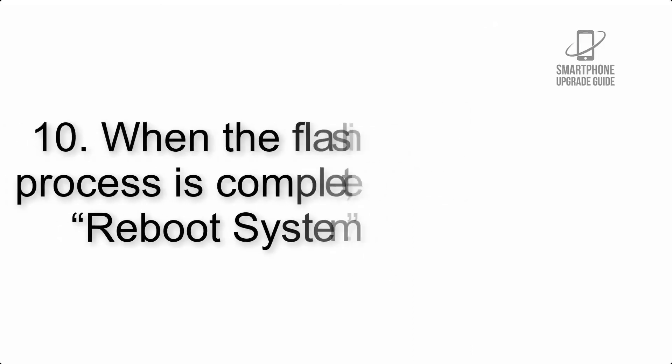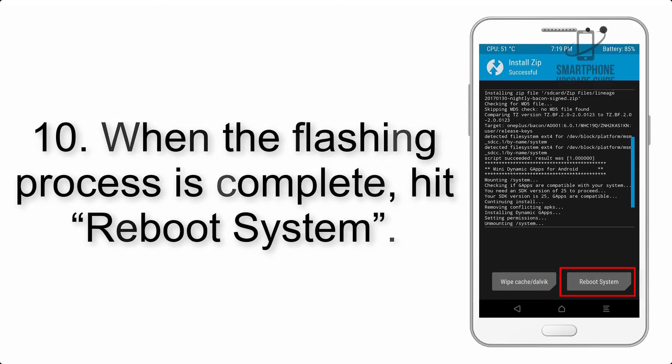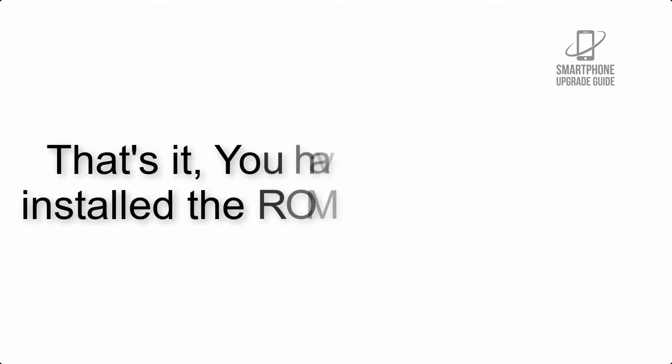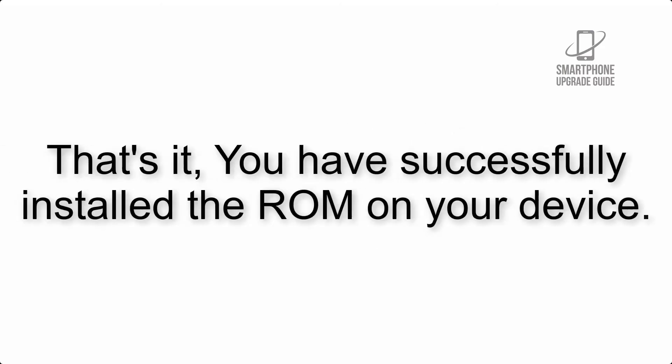Step 9: After GApps flashing completes, select Wipe Cache and Dalvik from the bottom left side of the screen and swipe to wipe. Step 10: When the flashing process is complete, hit Reboot System. That's it — you have successfully installed the ROM on your device.